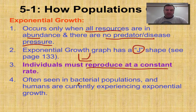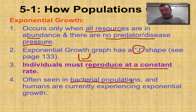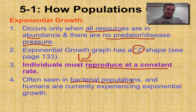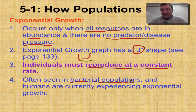We do see this in bacterial populations. E. coli is going to reproduce every 20 minutes under optimal conditions. After 20 minutes you've got two of them. After another 20 minutes those two are now four, and then you have eight, then sixteen, thirty-two, sixty-four, one hundred twenty-eight, and so on and so forth. Within 24 hours or so you can have millions of these little organisms.